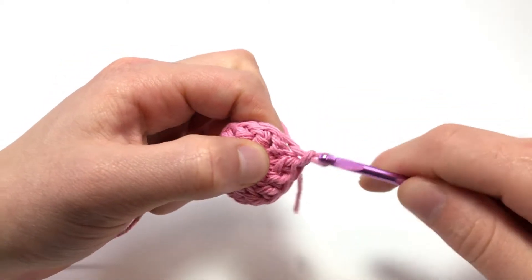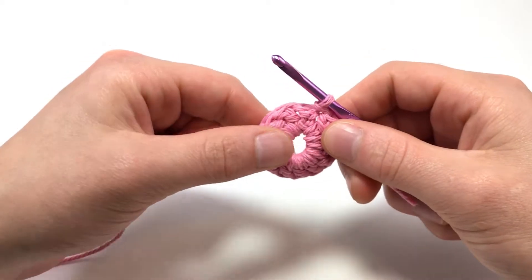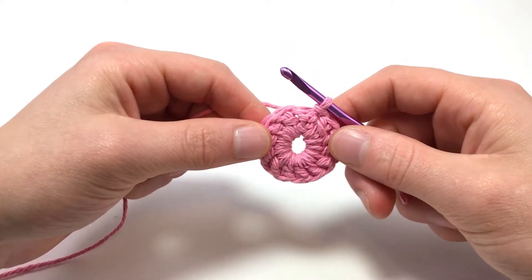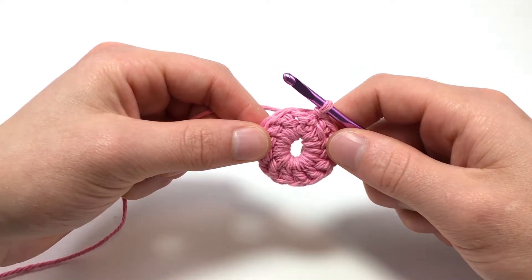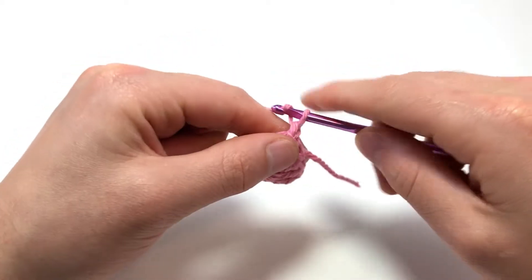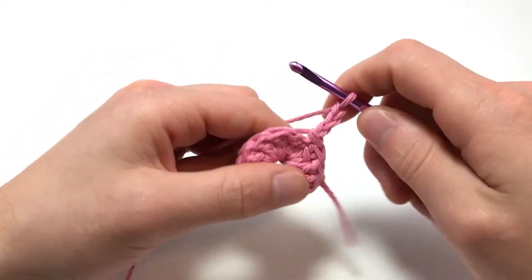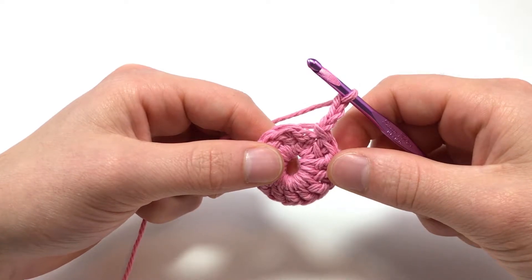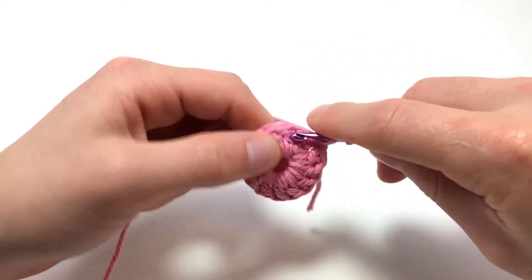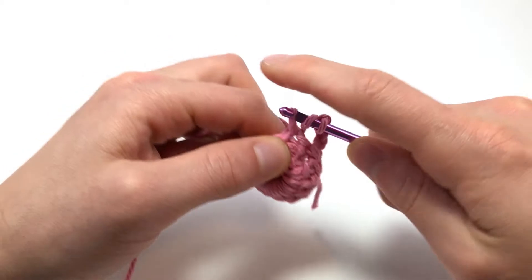Now we just continue on. Depending on the pattern you might have to turn here, which is why I say it's kind of like a meld between working in the round and working flat. Though a lot of patterns just have you continue on without turning. We're not going to be turning. The main difference between joining in the round and simply working in the round is that you'll have to do that first chain before continuing, like you do when you're working flat. For example, here since we're working with double crochet stitches, we'll chain 3 before continuing. Now you can continue on, putting the rest of your stitches into the 2 loops, like normal.